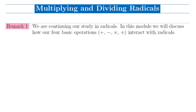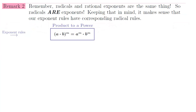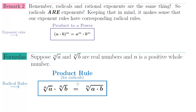We're starting a brand new module where we'll study how our four basic operations — addition, subtraction, multiplication, and division — interact with radicals. For the first topic we're going to talk about multiplying radicals. Remember, radicals are rational exponents; the square root is the same as the one-half power. So our exponent rules translate into radical rules, and specifically the product-to-a-power rule translates into the product rule for radicals.